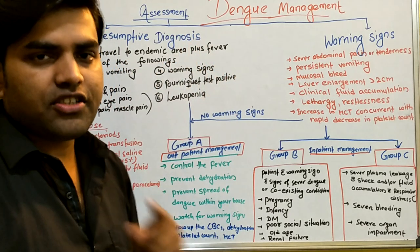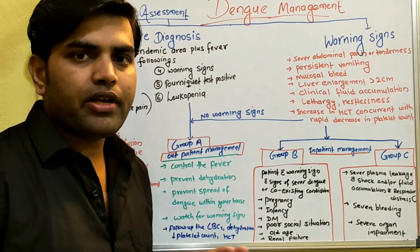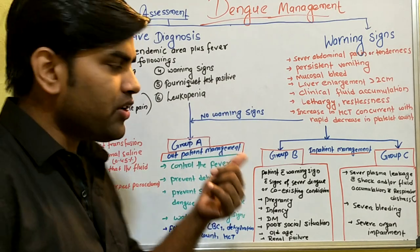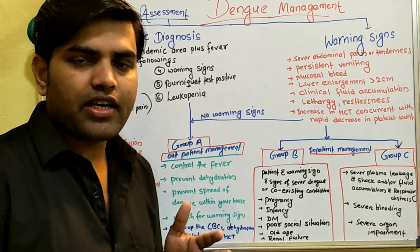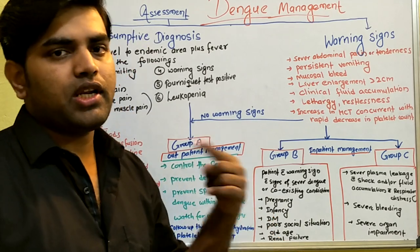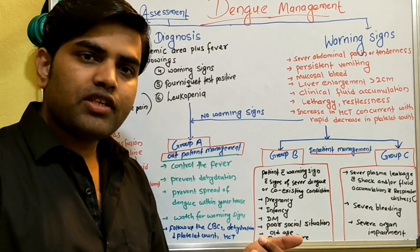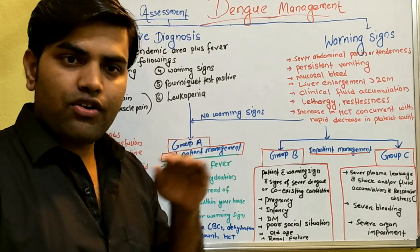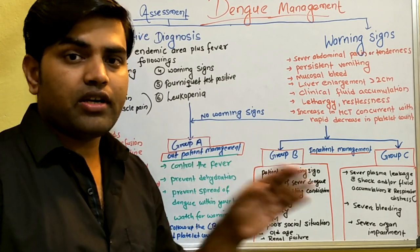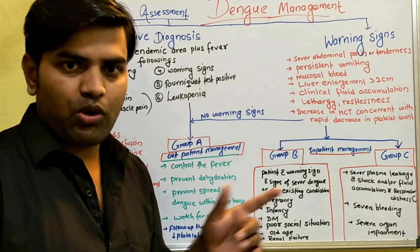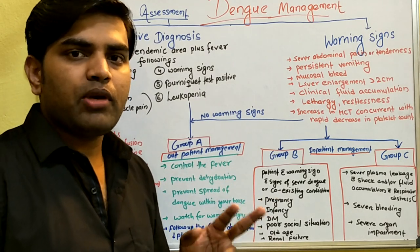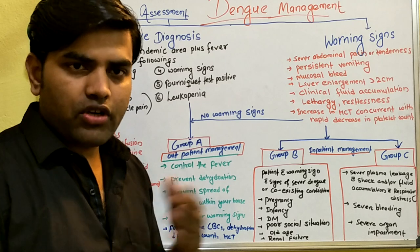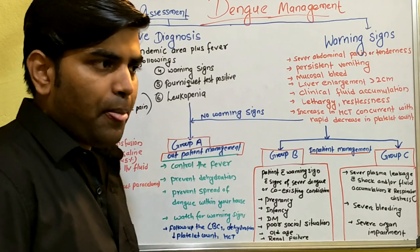Since dengue and scrub typhus are both currently in outbreak in Nepal, you need to understand that thrombocytopenia — a decrease in platelet count — will be present in both scrub typhus and dengue. Leukopenia can also be present in both, although in scrub typhus most cases show normal WBC count. Liver enzyme elevation will also be present in both. In scrub typhus, you will find an eschar — we'll discuss scrub typhus in a subsequent lecture.